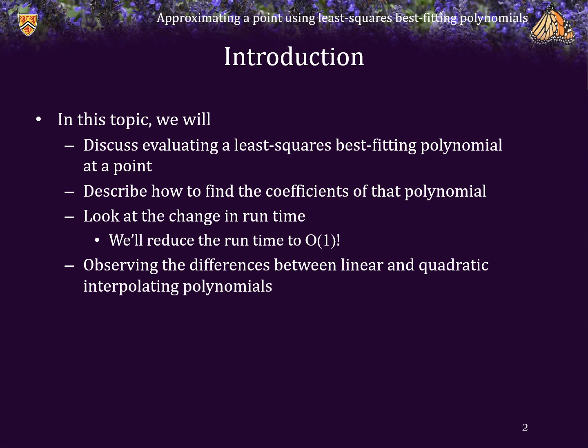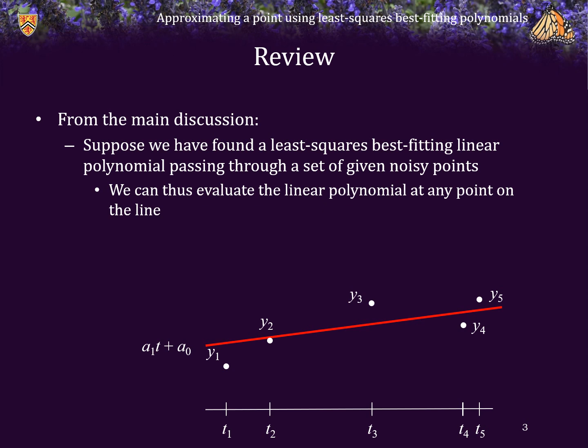We will be looking at the change in runtime with our more efficient means of finding these coefficients, and we'll see that we can reduce the runtime to order one per step. We're also going to observe the differences between using linear and quadratic least squares best fitting polynomials for estimating the value of the signal at the current time and extrapolating one step into the future. From the previous discussion, we've seen that we can find the least squares best fitting linear polynomial passing through a given set of noisy data, and this should be a reasonably good approximation. Here we're moving back into the time domain, as we will be implementing solutions we would use in an embedded system to estimate our current position, future positions, etc., based on previous or historical data.